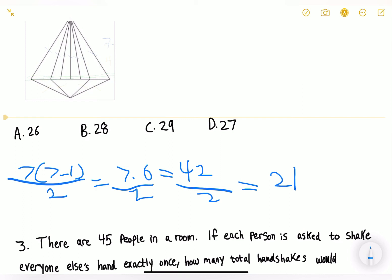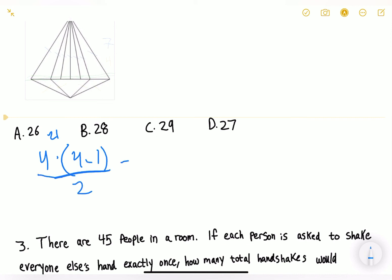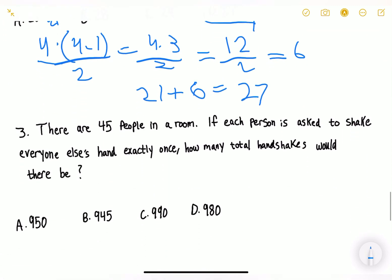We'll keep 21 in mind. Triangle number two has four lines, so four times four minus one divided by two. That's 4 times 3, then divided by 2, which is 12 divided by 2, equals 6. Now we simply add: 21 plus 6 equals 27. Our answer is D. That was really simple.